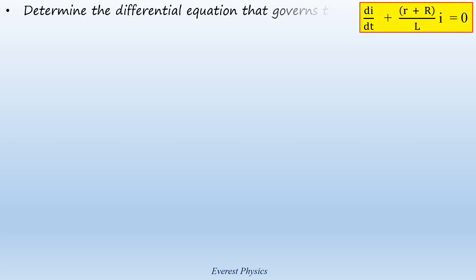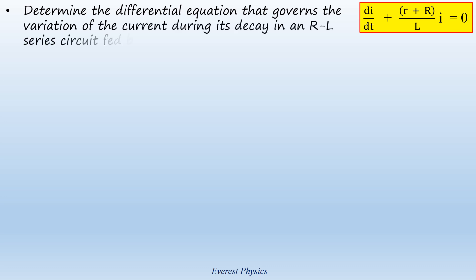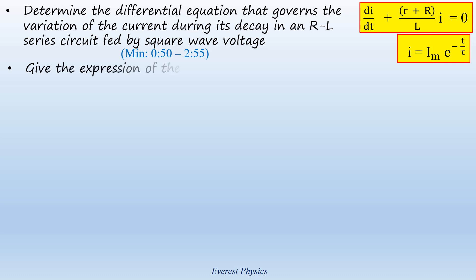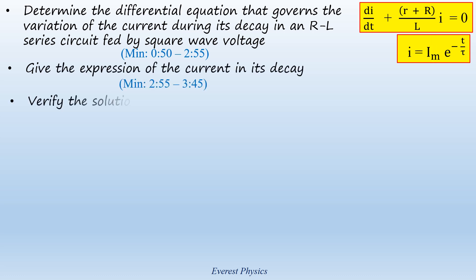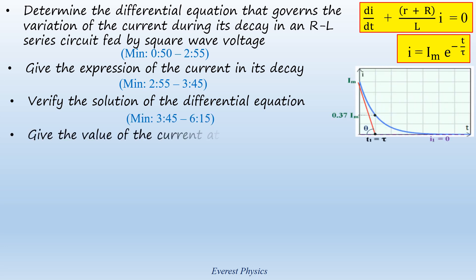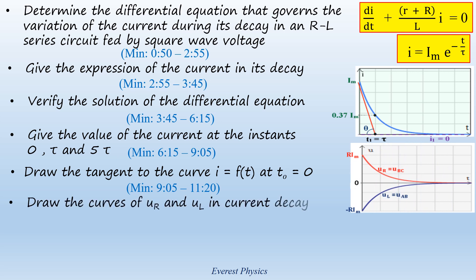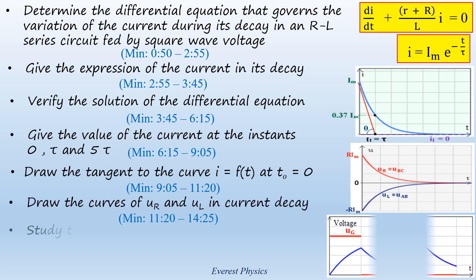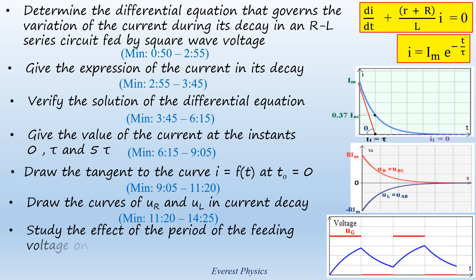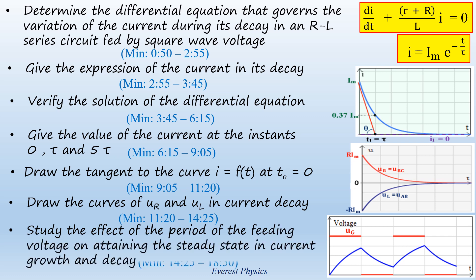We are going to determine the differential equation that governs the variation of the current during its decay in an RL series circuit fed by a square wave voltage. We will give the expression of the current in its decay, verify the solution of the differential equation, give the value of the current at the instances 0, τ, and 5τ, draw the tangent to the curve i = f(t) at t₀ = 0, and draw the curves of uR and uL in current decay, then study the effect of the period of the feeding voltage on attaining the steady state in current growth and decay.